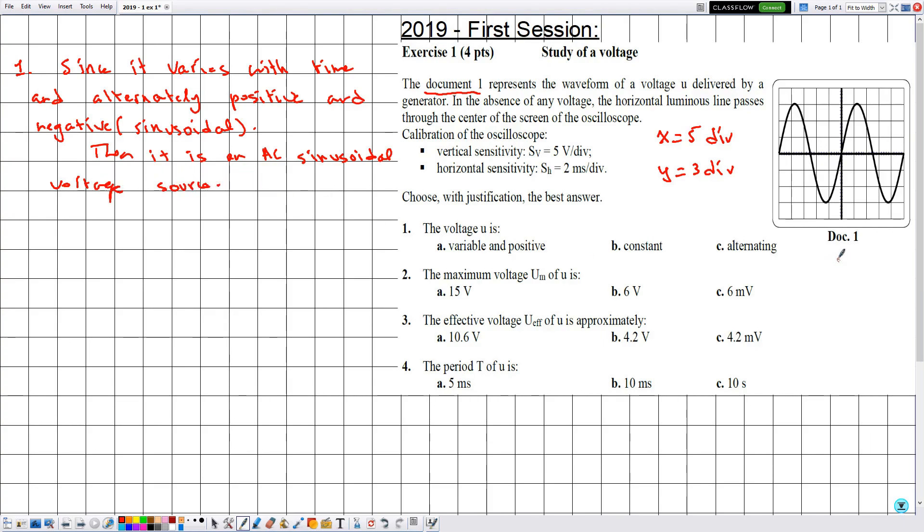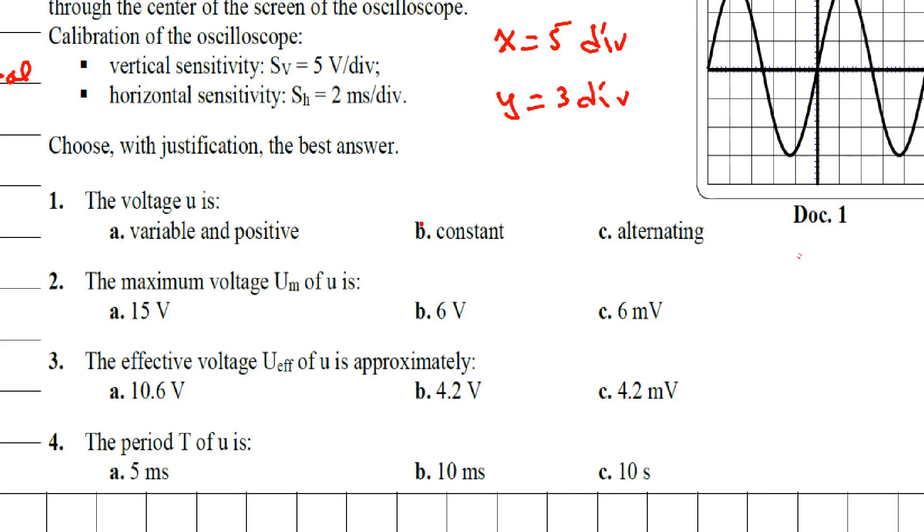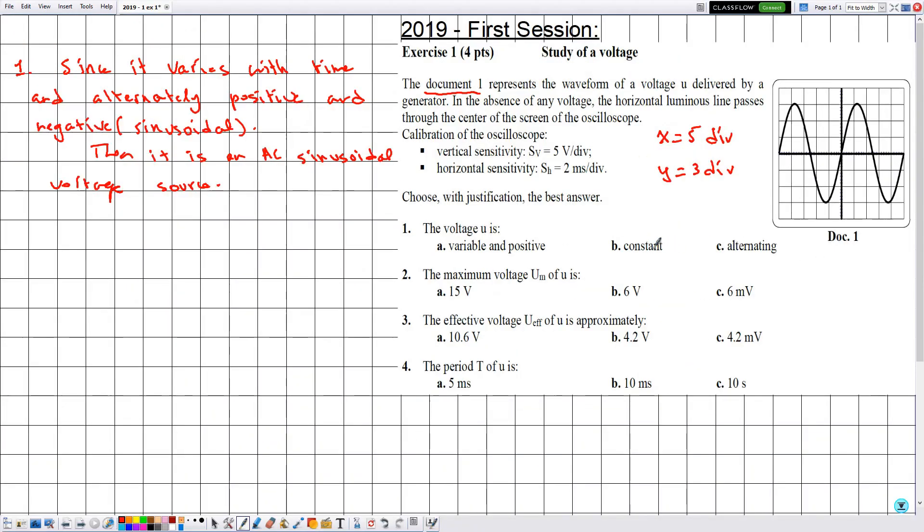For sure, answer b is wrong, so let's eliminate b. As for a, it's correct that it is variable, but it's not only positive, it's positive and negative. So answer a is wrong. Then we are left with c. It is indeed alternating, so the correct answer is c.